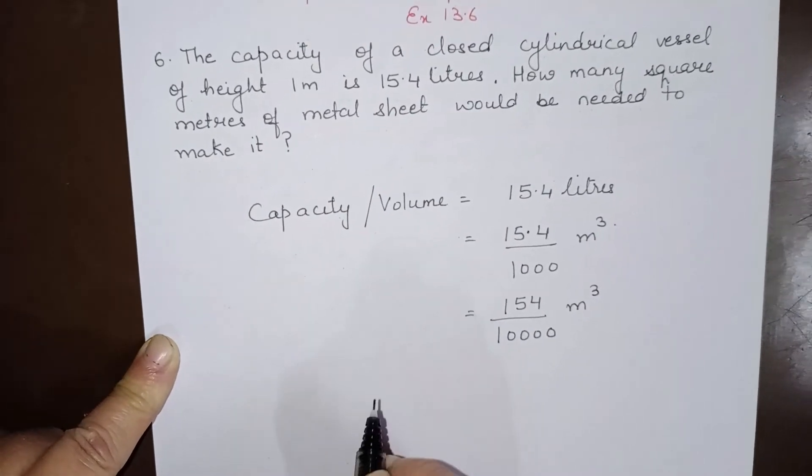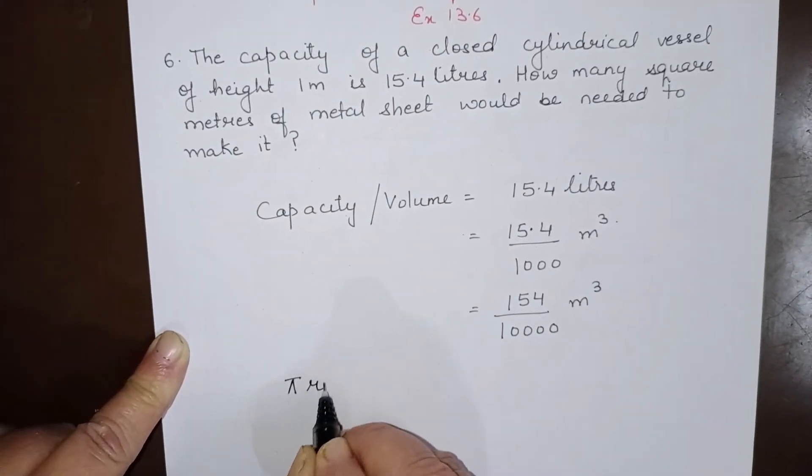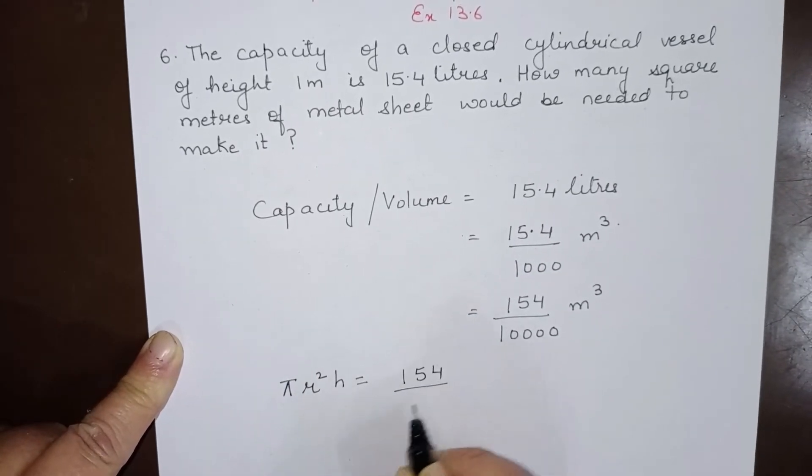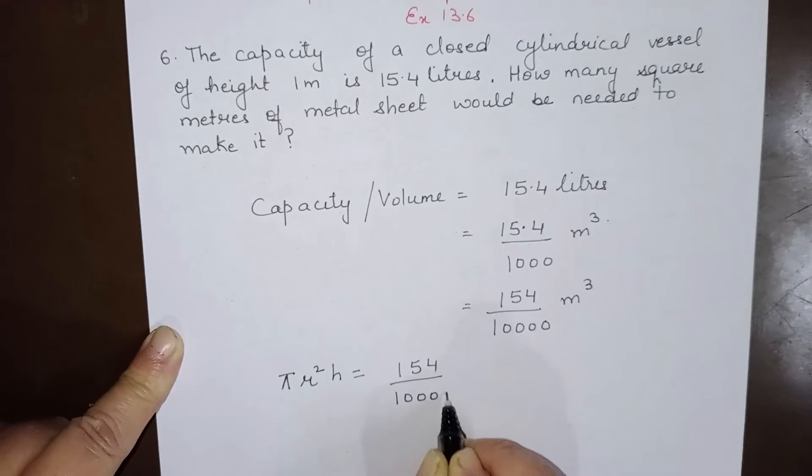Now this is a cylindrical vessel. Capacity is given by πr²h. So that means πr²h equals 154 over 10,000.